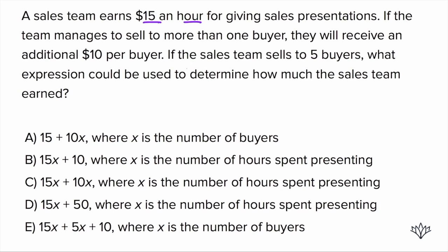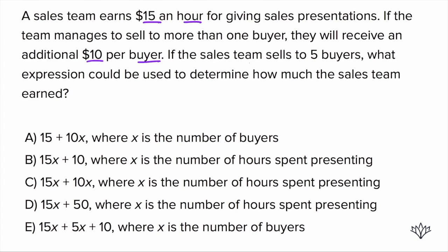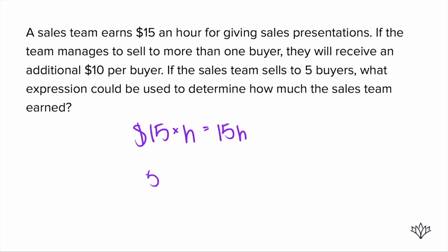What else do we know? We know that if the team manages to sell to more than one buyer, they will receive an additional $10 per buyer. So if they sell to more than one, they get $10 per buyer. The problem tells us the sales team sells to five buyers. Because it's more than one — it's five — they get $10 per buyer. That's a fixed number: five times 10 is 50. So our expression is 15H plus 50.